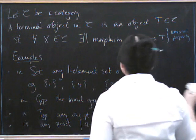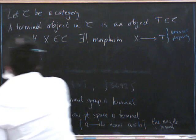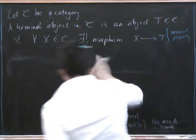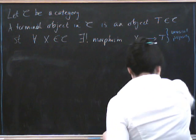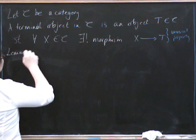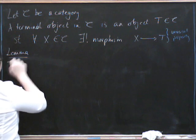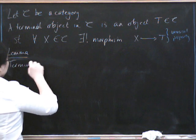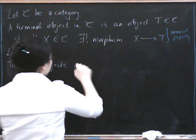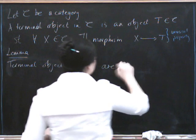Let's move swiftly on from that. Now let's prove that terminal objects are unique, up to unique isomorphism. So here's the lemma, which is very important.